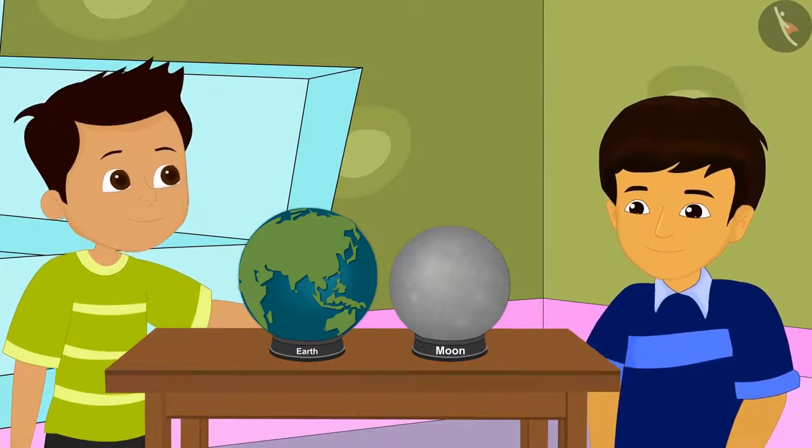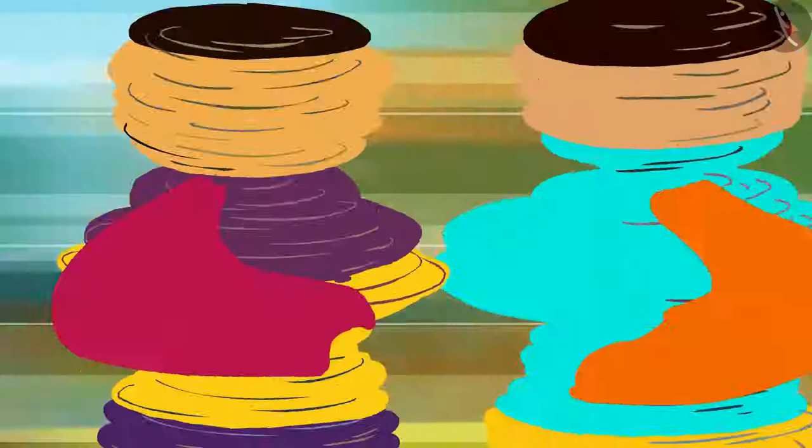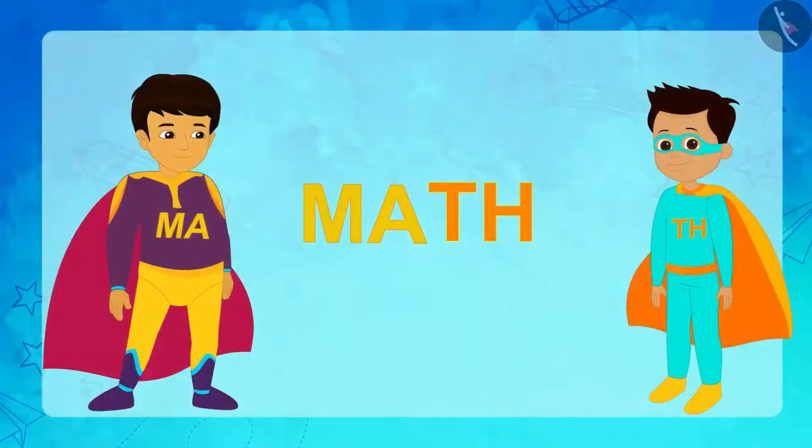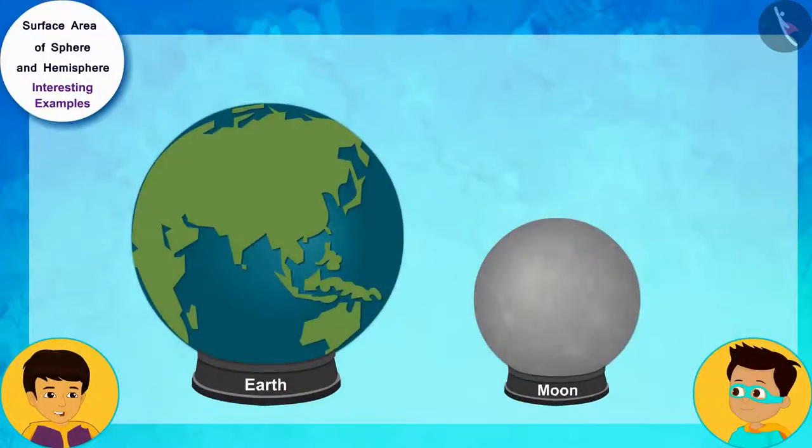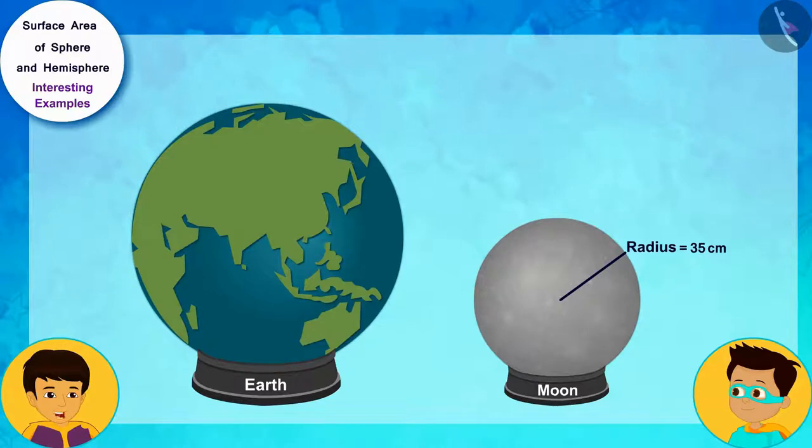That means, it's math time! Look, Thomas. The models of both the moon and the earth are hollow spheres. The radius of the moon's model is 35 centimeters and the radius of the earth's model is 140 centimeters.